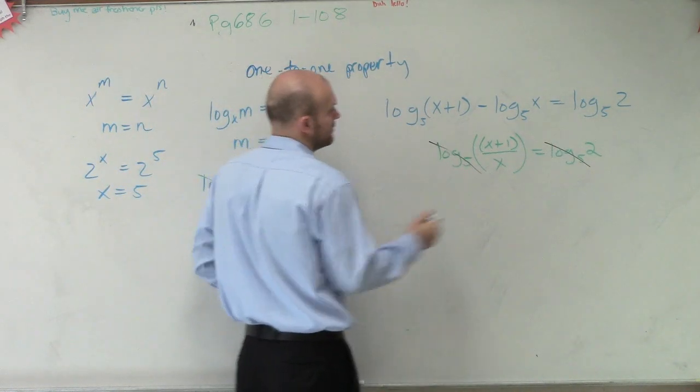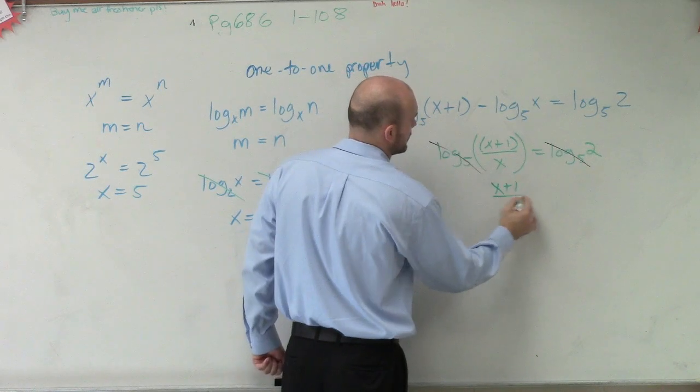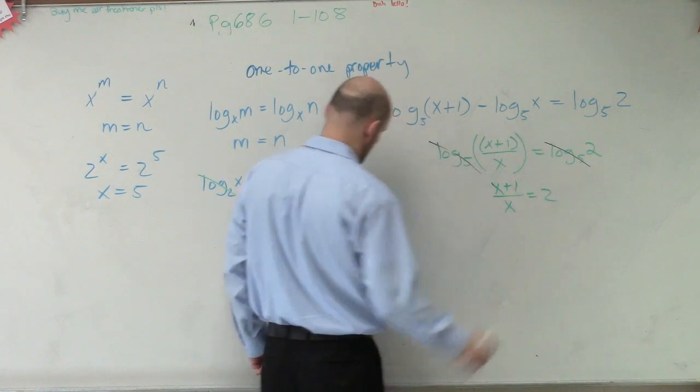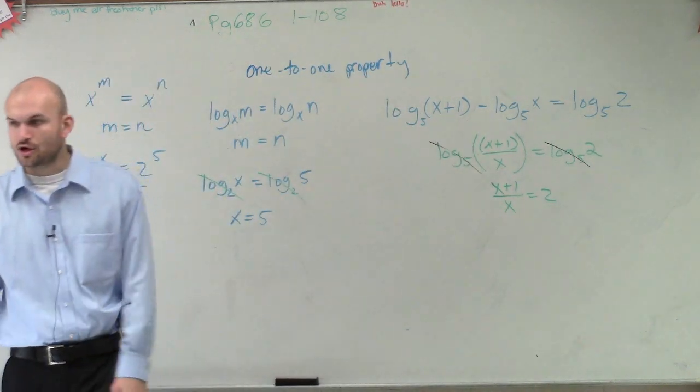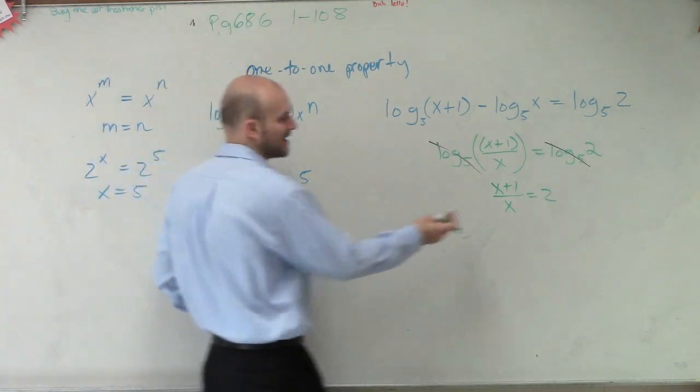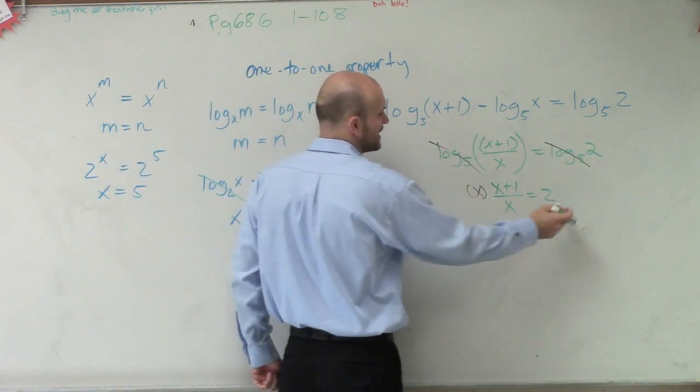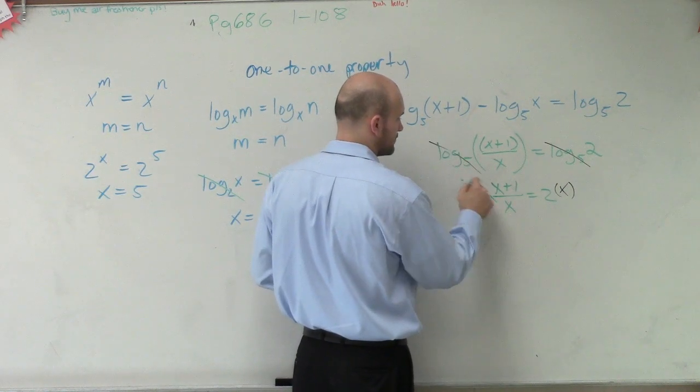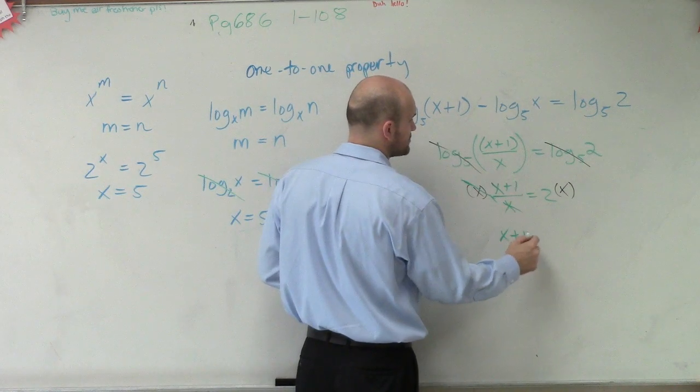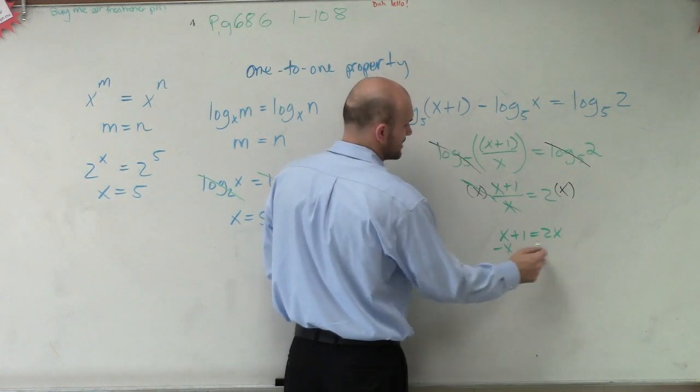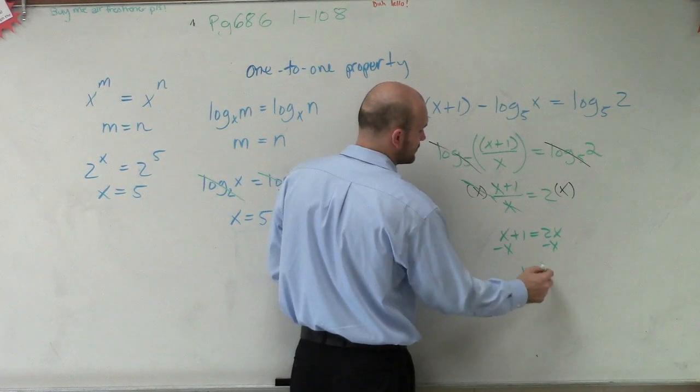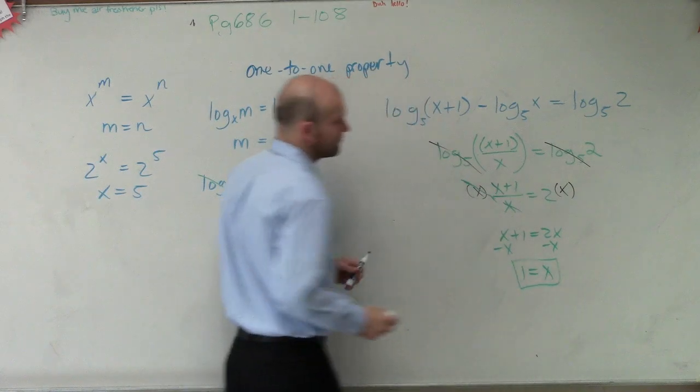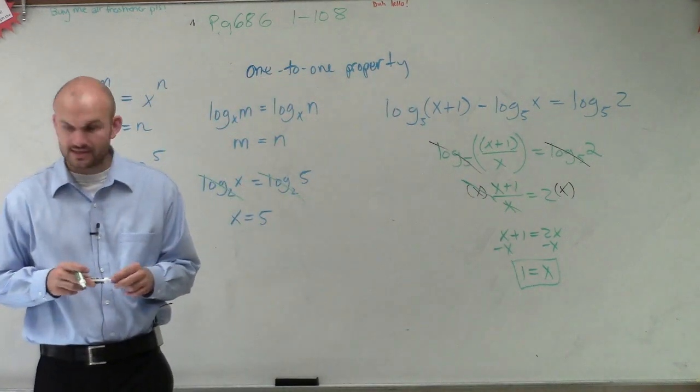So now, I have x plus 1 over x equals 2. So now, I need to learn how to solve this, right? Well, remember, guys, we can get the x off the bottom by multiplying x on both sides. So therefore, I have x plus 1 equals 2x, subtract x, subtract x, 1 equals x. And there you go. That's your final answer.